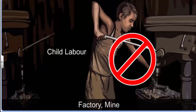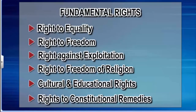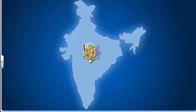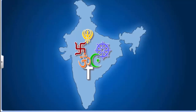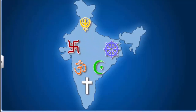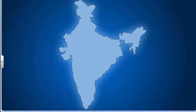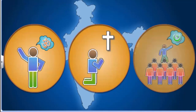We have seen the first three fundamental rights, namely the right to equality, the right to certain freedoms, and the right against exploitation. India has no official religion. The people of India follow different religions, making India a secular state. Every citizen of India has the right to freely profess, practice, and propagate any religion. Individuals are free to change their religion at their will.